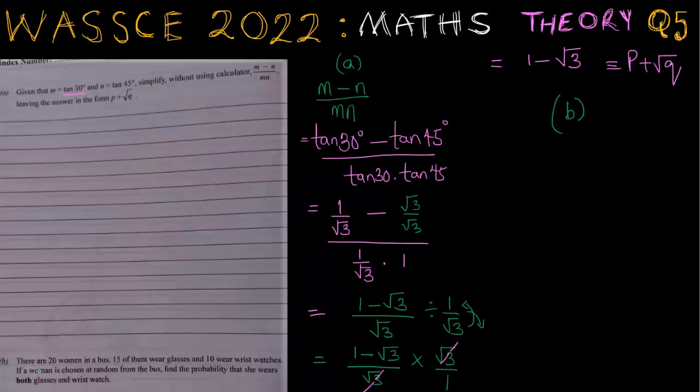The b part, we are told that there are 20 women in a bus. 15 of them wear glasses and 10 wear wristwatches. If a woman is chosen at random from the bus, find the probability that she wears both glasses and a wristwatch. So we've got 20 people on the bus, so N equals 20. 15 of them wear glasses, so n(G) equals 15. 10 of them wear wristwatches, so n(W) equals 10.